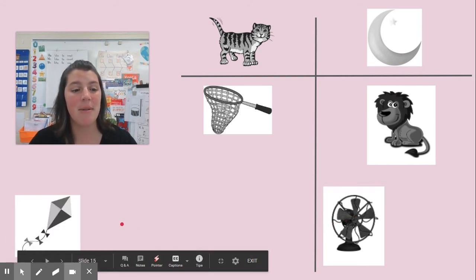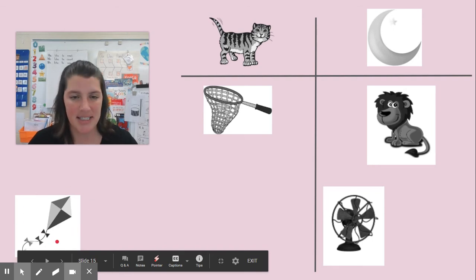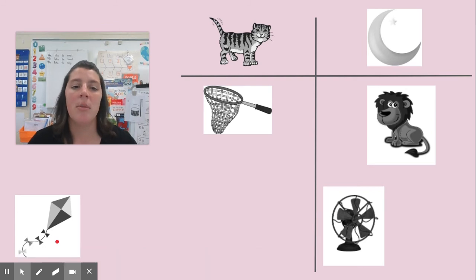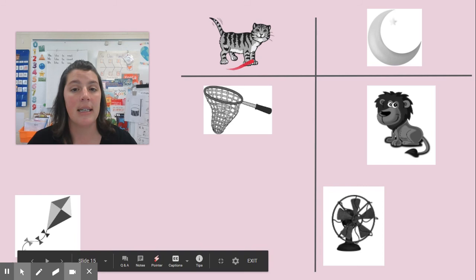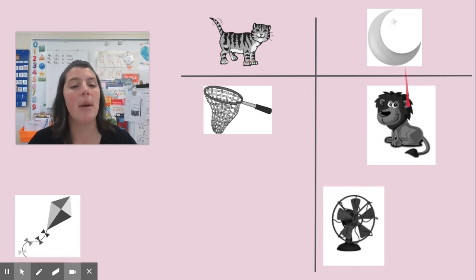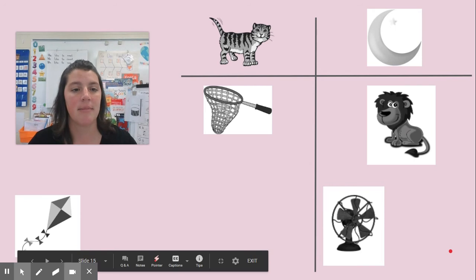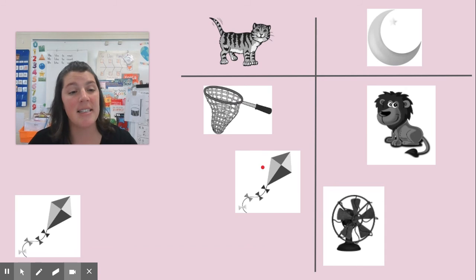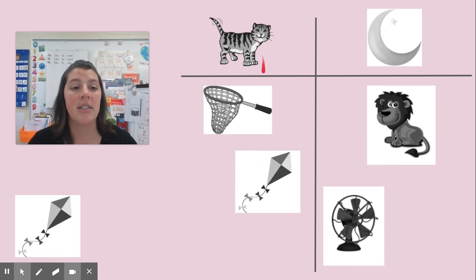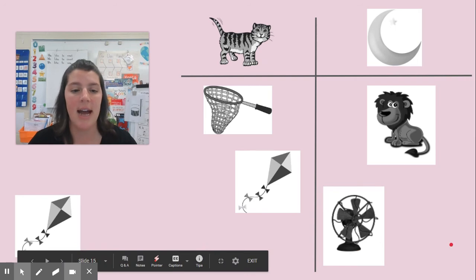Let's try another one. Here's my next picture — kite. Take your finger and put it under the picture that has the same ending sound. Is it cat or moon? Where would I put the picture kite? I would put it under cat, because at the end of the word kite, I hear the t sound just like in cat.